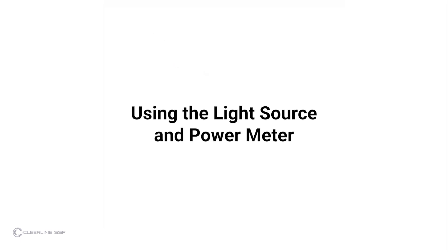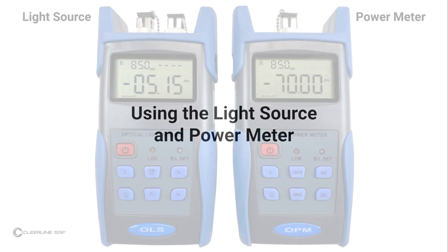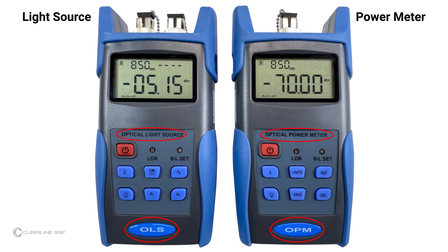For full information on light source and power meter functions, refer to the included instruction manual. The light source and power meter can be identified by labels on the front of each unit. The keys and indicators included on both units are the following.